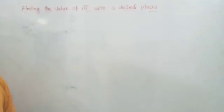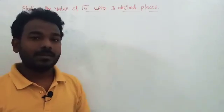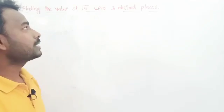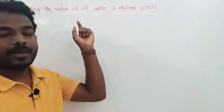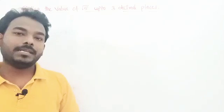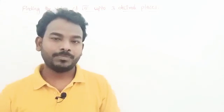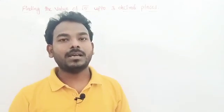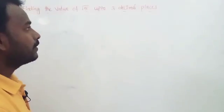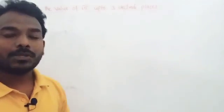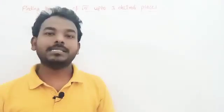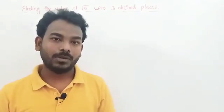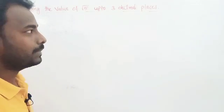Why up to three decimal places? Because we consider root 5 as irrational — the expansion of the value of root 5 will be a non-terminating, non-recurring decimal number. That is the reason we call root 5 an irrational number. If we want to find the exact value, we cannot, because it goes on and won't repeat. So we restrict it to some decimal places — here, three decimal places.